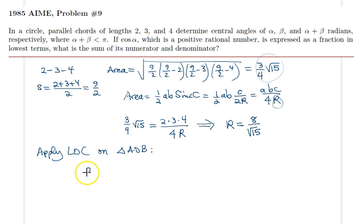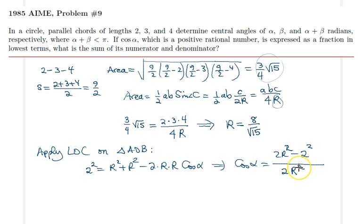So therefore I have 2 squared is equal to R squared plus R squared minus 2 times R times R cosine alpha. From here, we would say that cosine alpha is simply equal to R squared minus 2 squared, so 2R squared minus 2 squared, all divided by 2R squared.